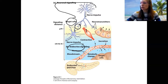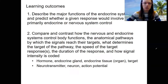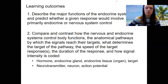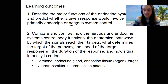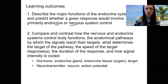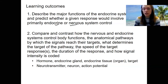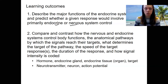What we've done today is describe the major functions of the endocrine system and predict whether a given response would involve primarily endocrine or nervous system control — depending on whether that function needs to be localized and quick. We compared and contrasted the two systems: how they control body functions, their signaling pathways, what determines targets, speed and duration of response, and signal intensity coding — action potential frequency versus amount of hormone produced. That's video one.